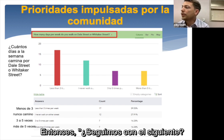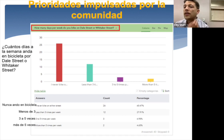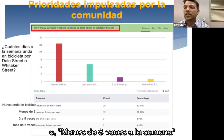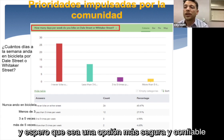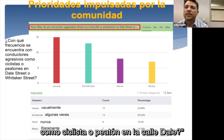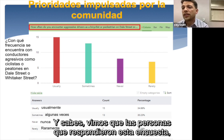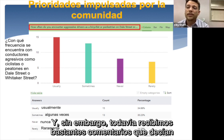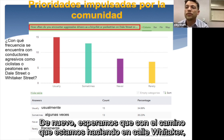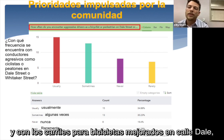The next question was how many days per week do you bike on Dale Street or Whitaker Street — again, mostly never or less than three times a week. We're hoping to increase those numbers and make it a safer, more viable option. On the question of how often they encounter aggressive drivers as a bicyclist or pedestrian, even among people who don't walk or bike, quite a few responded 'usually' or 'sometimes.' We're hoping road calming on Whitaker and enhanced bike lanes on Dale will help.